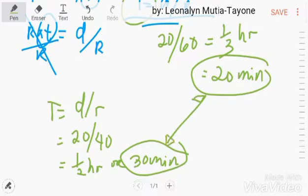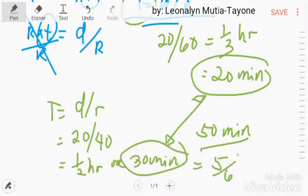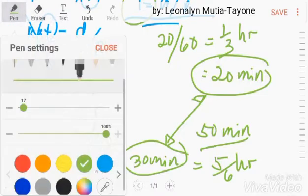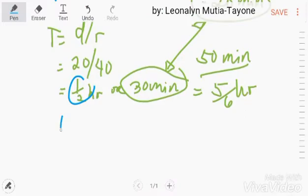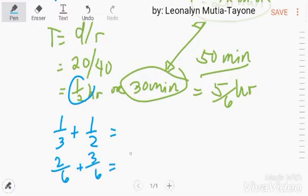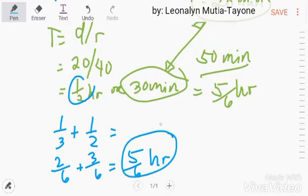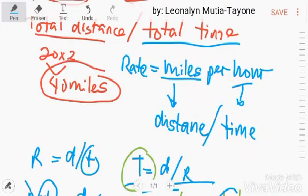So, ito, i-add mo to. And this is 50 minutes. 50 minutes is also equal to 5 over 6 hour. Or, gusto mo, ito ang i-add natin. Si one third at saka si one half. So, this is 2, 6 plus 3, 6, 5, 6 hour. Pareho lang. So, si 5, 6 hour, yan yung total time natin.